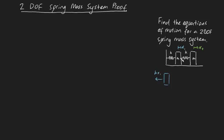Now, how do you find the forces on this mass from the middle spring? My preferred method is to first imagine what happens when this mass moves a distance x2 and the first mass remains stationary. If that's the case, this spring will be stretched, meaning it'll be pulling on this mass in this direction with a force kx2. Then you consider what happens when this mass is moving but the second mass is remaining still — the spring will be compressed, pushing back on this mass with a force kx1. Of course you can also do this by relative motion if you prefer.